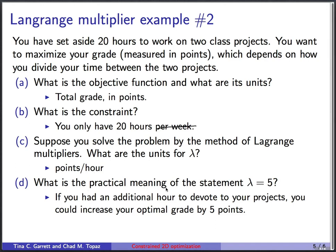What is the practical meaning of the statement lambda equals 5? Well, the Lagrange multiplier always means the change in the optimum, change in the optimal value given a unit increase in the constraint. So here, unit increase in the constraint means pretend you had an additional hour to devote to your projects. And what lambda equals 5 means, if you had that additional hour, you could increase your optimal grade by 5 points.